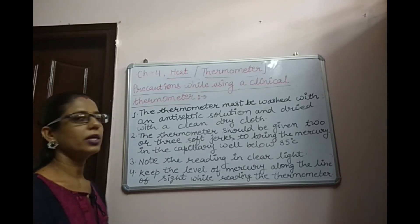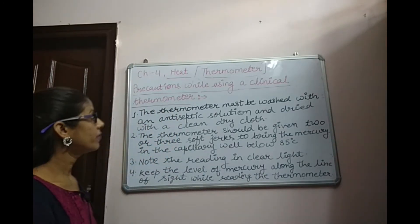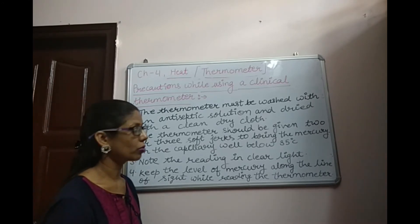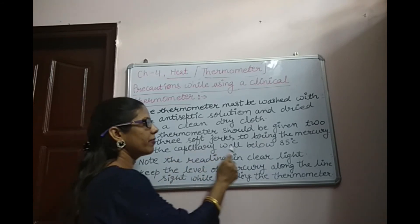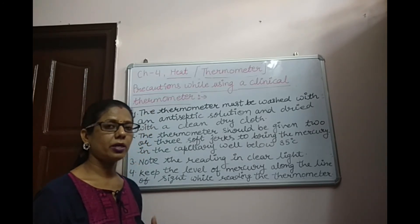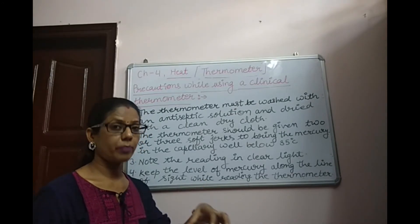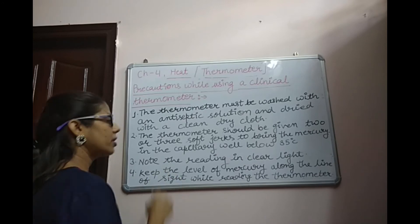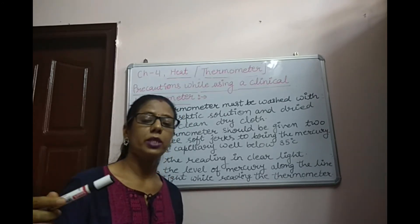Our next topic is precautions while using a Clinical Thermometer. First, the thermometer must be washed with an antiseptic solution and dried with a clean cloth before and after every use. Second, the thermometer should be given 2 or 3 soft jerks to bring the mercury in the capillary well below 35 degree Celsius. While giving the jerks, the thermometer should not hit any hard object, because it can break.